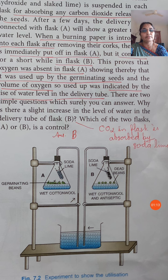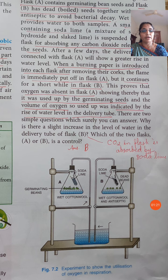Both the flasks are tightly closed with a cork and connected with a delivery tube from each flask. The end of the delivery tube is submerged in a beaker containing colored water.